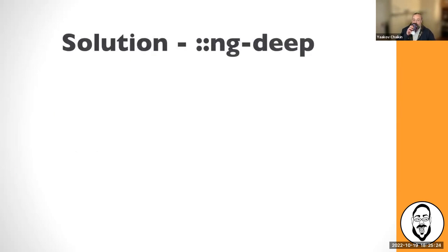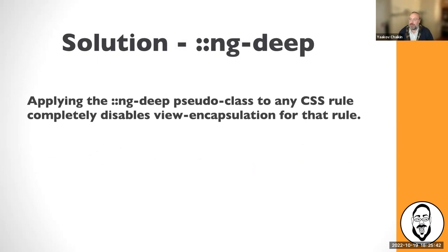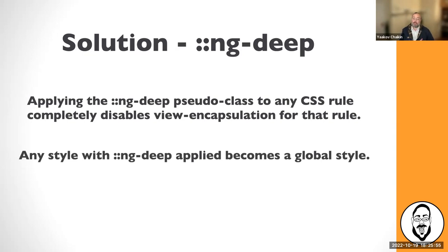In Angular, one solution is to use this special ng-deep pseudo-class prefix for a CSS rule. It completely disables view encapsulation for that rule, making any style with ng-deep applied to it a global style. Basically, you're saying you want to crack open a component and reach inside, grab a particular property or style, and open it up to the entire world so it's no longer encapsulated. That way you can mess with it however you want on the outside as the client.